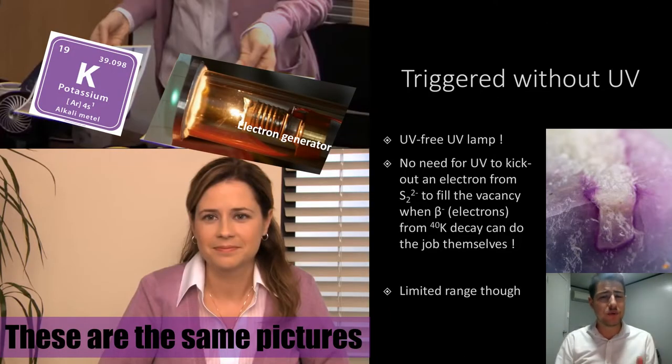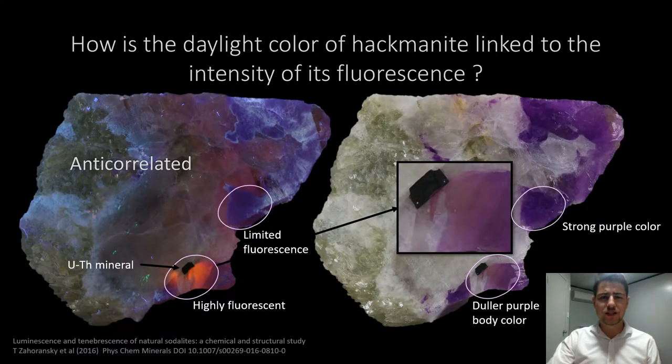Potassium-40 is an electron generator and it triggers the very same phenomenon as a UV lamp just without UV. It sends an electron to fill the vacancy and that's just enough to activate the hackmanite in the limiting range, as you can see in this picture.